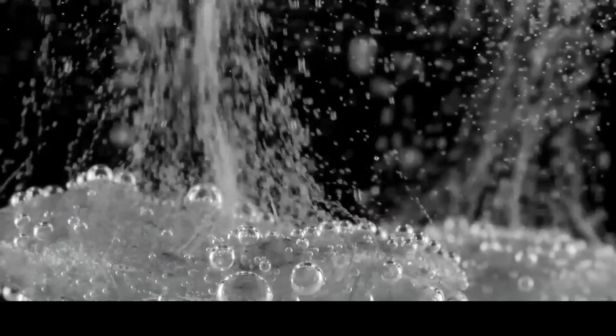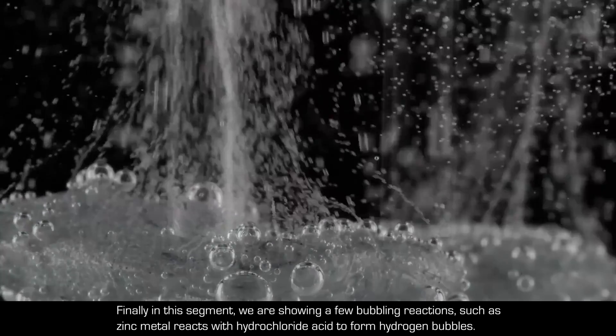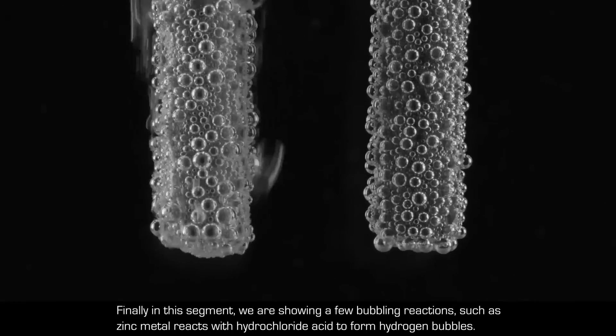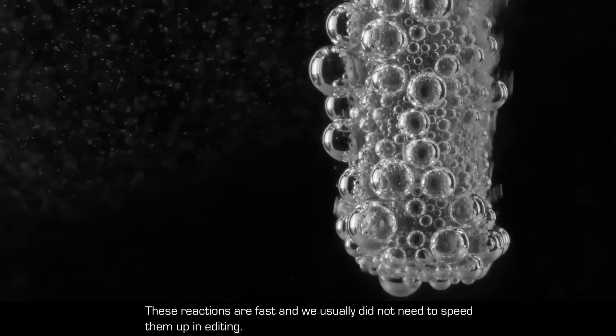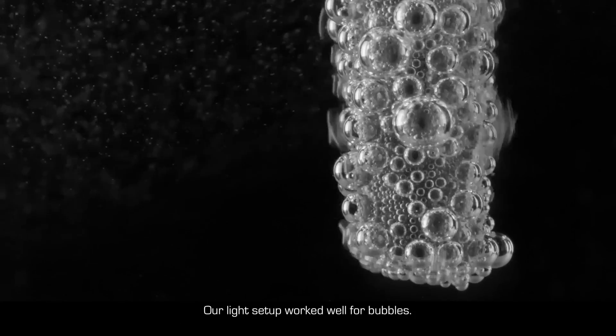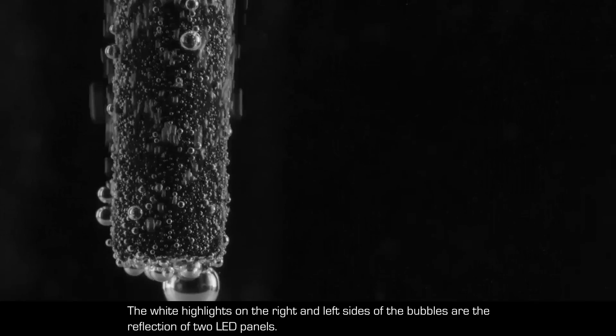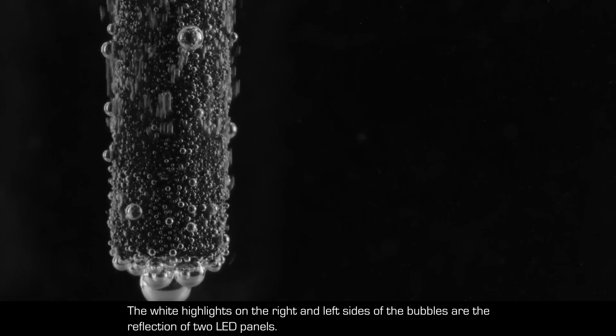Finally in this segment, we are showing a few bubbling reactions, such as zinc metal reacts with hydrochloric acid to form hydrogen bubbles. These reactions were fast, and usually we did not speed them up in editing. Our light setup worked well for bubbles. The white highlights on the right and left side of the bubbles are the reflection of the two LED panels. These highlights give bubbles a very interesting look.